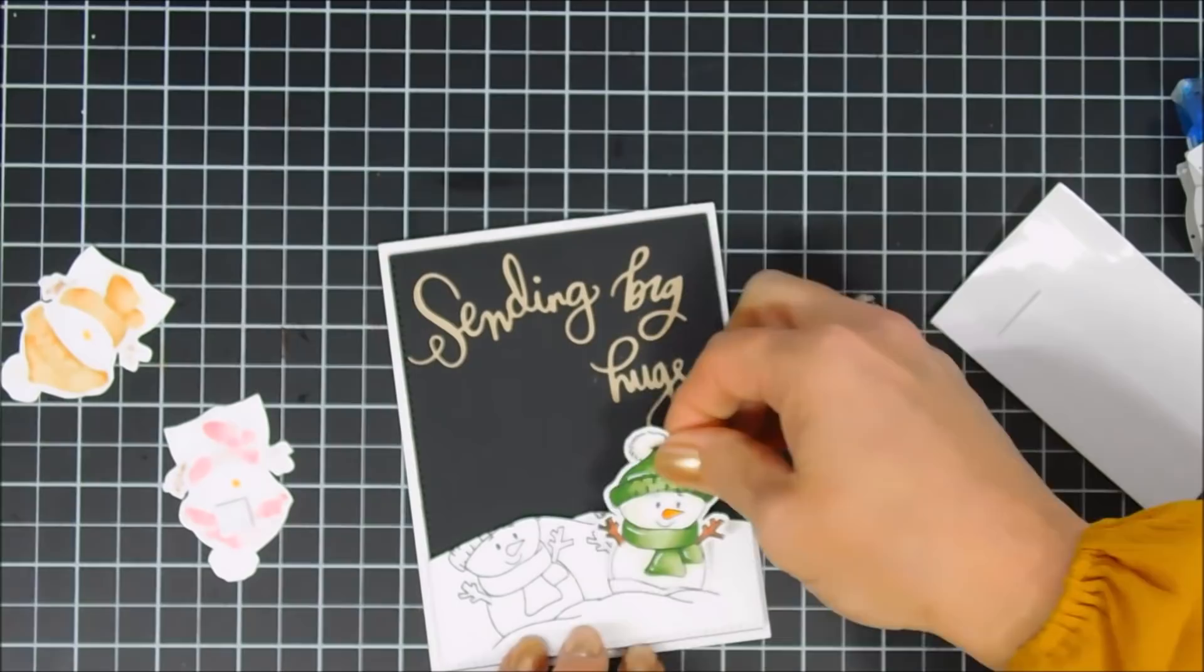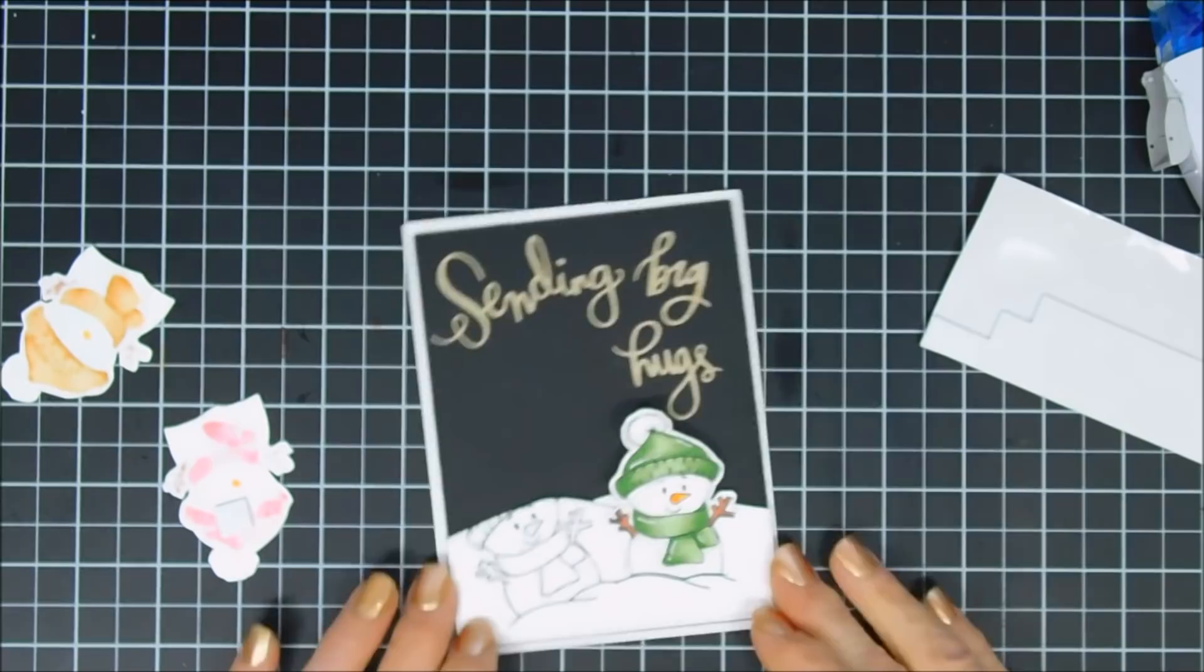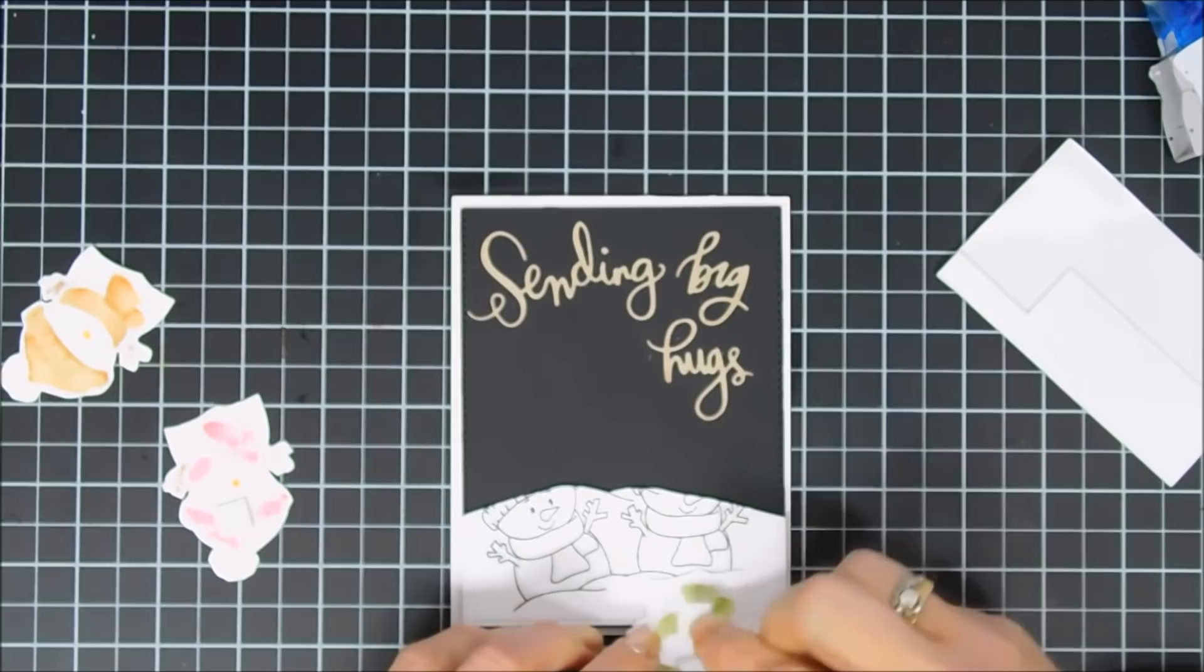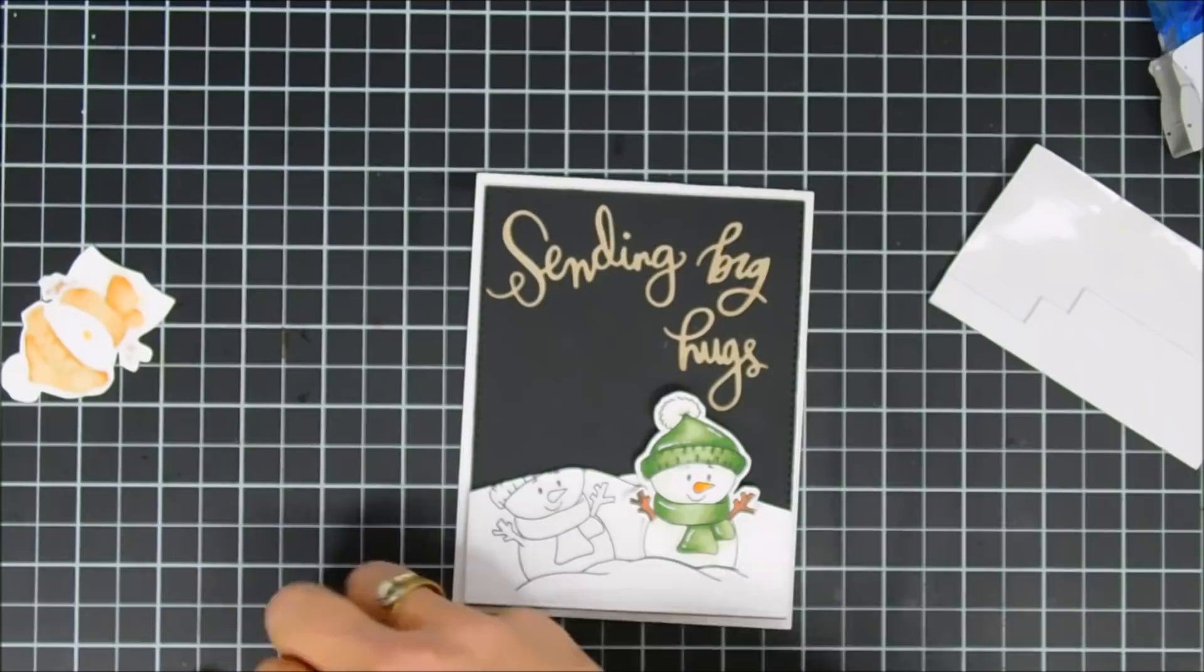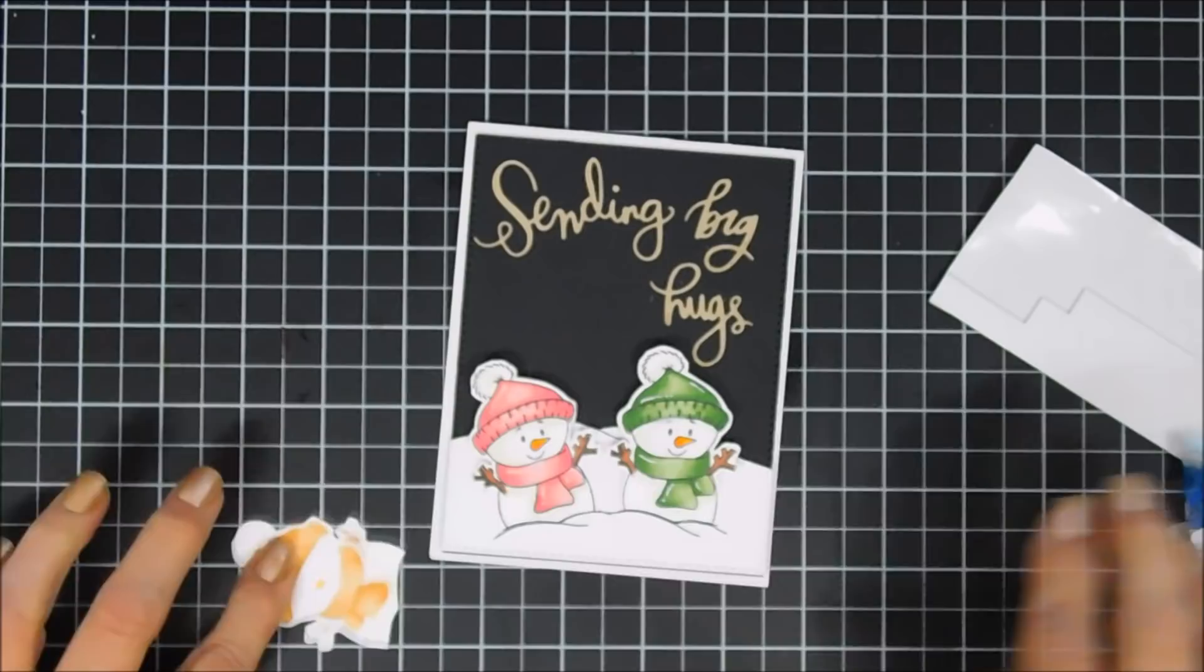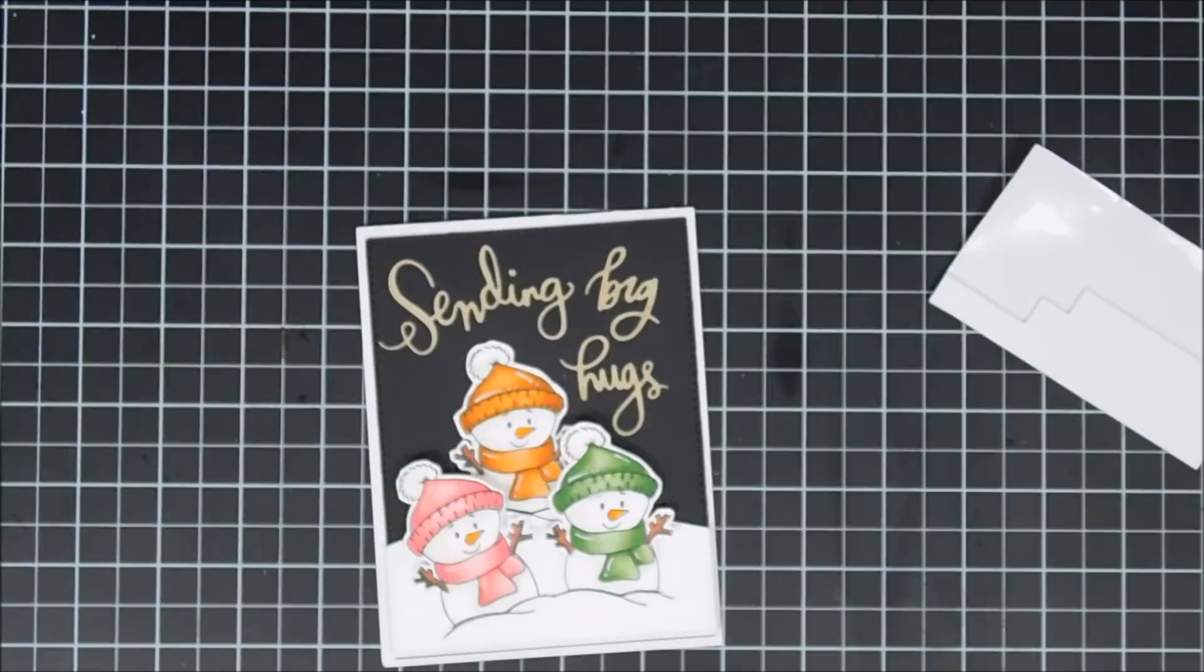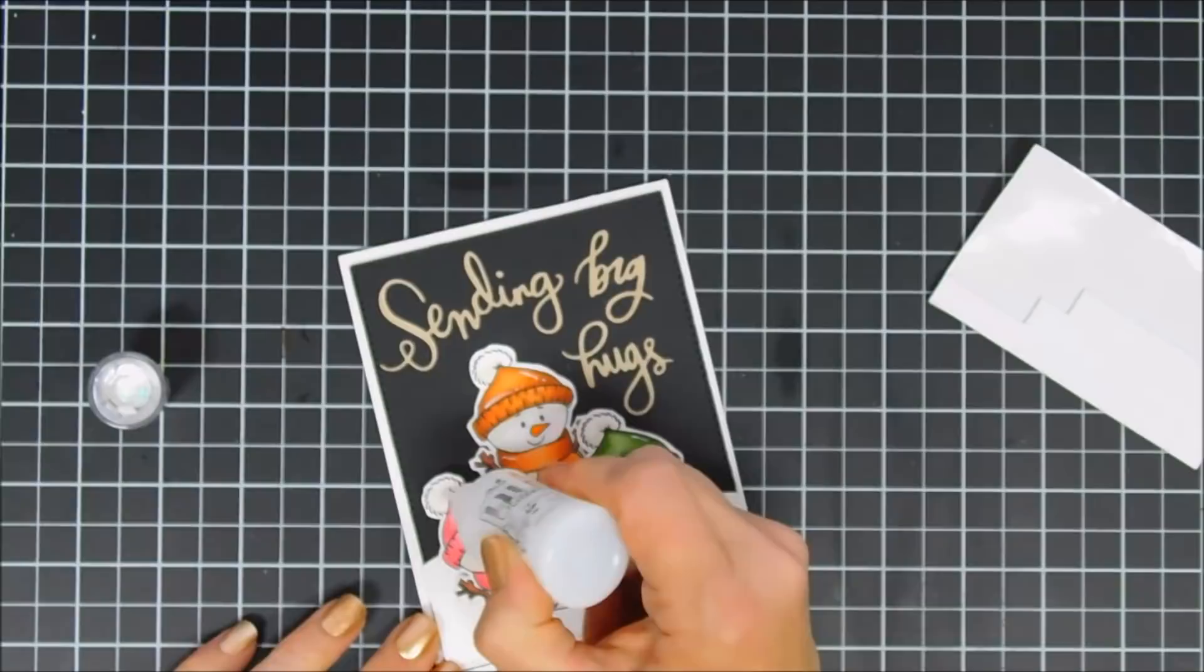Now I'm adding foam adhesive to the top portion of our snowman and then the very bottom I use my tape runner. This way the bottom's adhered to the snowbank that we stamped but the top has a little added dimension and I think that looks so cute. Aren't they sweet? You just think they're like little baby snowman. We'll add the pink one and then we'll go ahead and adhere our orange one directly on that black panel there. Just love those bright colors against that black background.